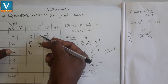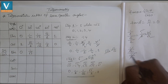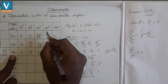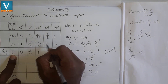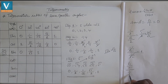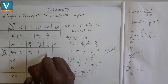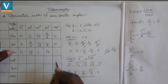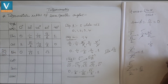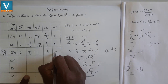Tan 45° = sin 45° / cos 45° = (1/√2) / (1/√2) = 1. Tan 60° = sin 60° / cos 60° = (√3/2) / (1/2); the 2s cancel giving √3. Tan 90° = sin 90° / cos 90° = 1/0, which is not defined — it is infinity.